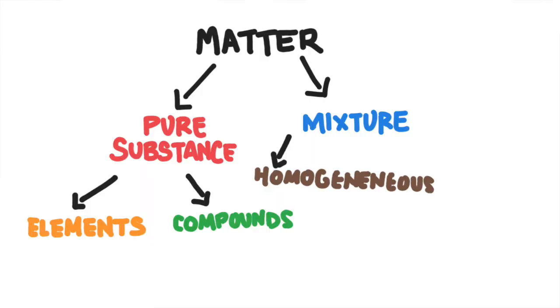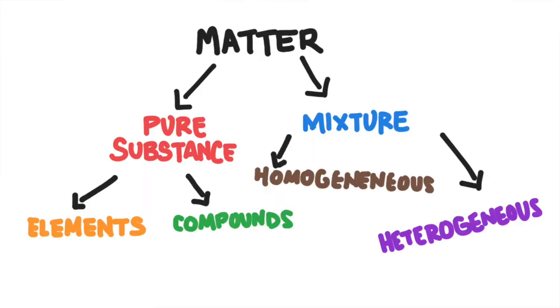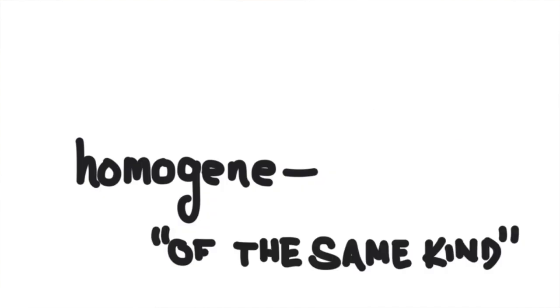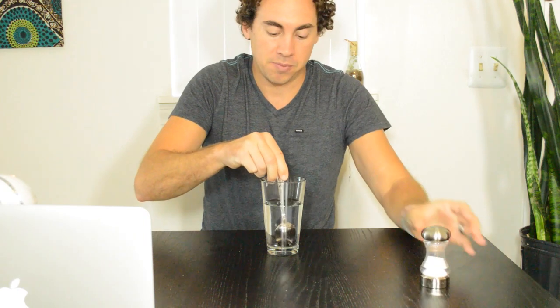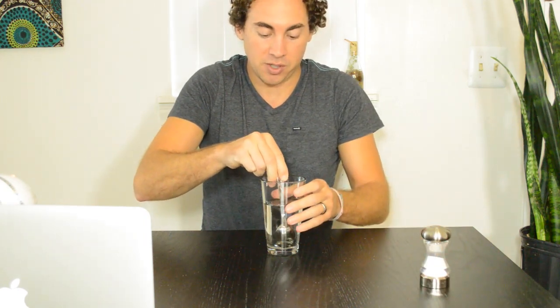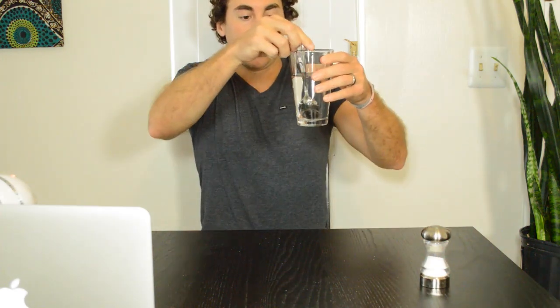Finally, there are two different types of mixtures: homogeneous mixtures and heterogeneous mixtures. The prefix 'homogene' means 'of the same kind,' so a homogeneous mixture is one that looks the same throughout — you can't see the different parts of the mixture. If I take a glass of water and stir some salt into it, once the salt completely dissolves, I'll no longer be able to see the salt, and it's going to look the same throughout. So a glass of salt water would be a homogeneous mixture.